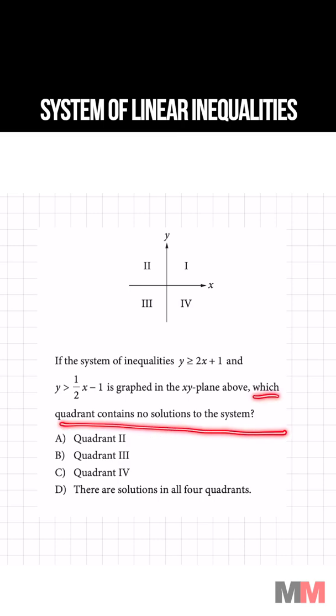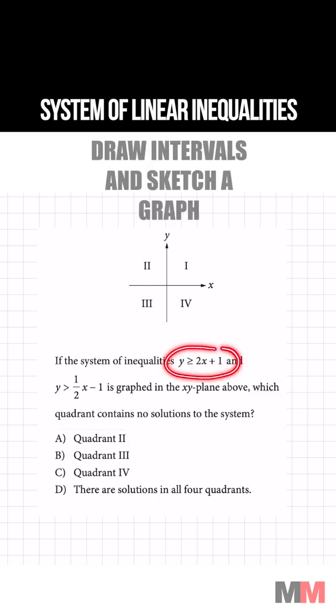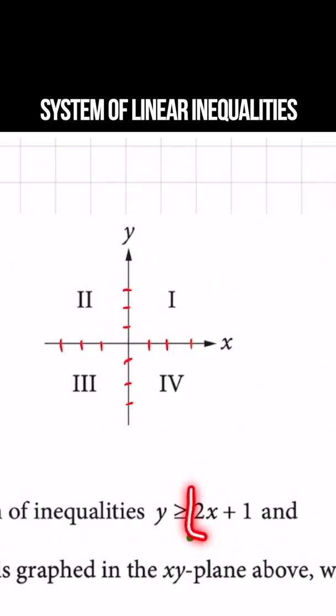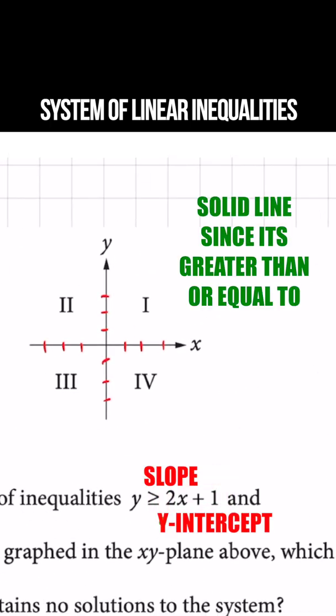Which quadrant contains no solution to the system made out of these two linear inequalities right here? To graph that, it's just as if it was a normal linear equation. It's already in slope-intercept form.